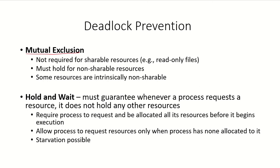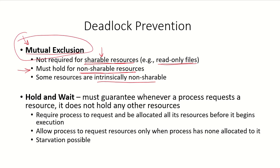The first condition is mutual exclusion, which means at any given point in time only one process can use a particular resource. To invalidate this, we can allow multiple processes to use shareable resources like read-only files. However, mutual exclusion must hold for non-shareable resources to avoid inconsistency. Resources like mutexes and semaphores are intrinsically non-shareable, so invalidating this condition is not very easy.